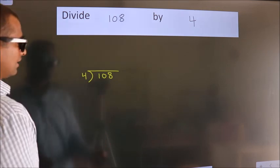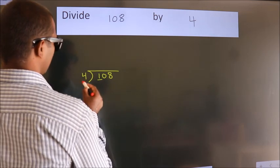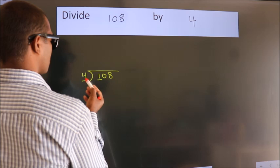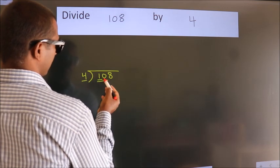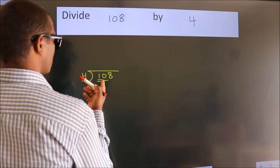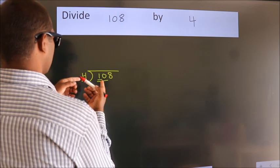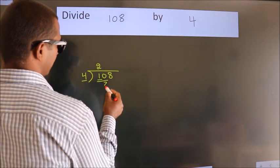Next. Here we have 1, here 4. 1 smaller than 4. So we should take 2 numbers, 10. A number close to 10 in 4 table is 4 twos, 8.